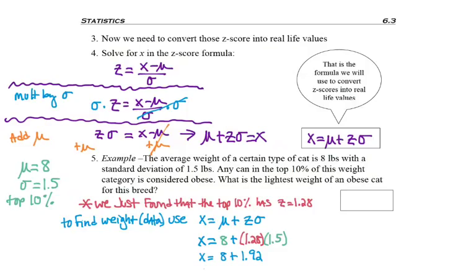So I multiplied, added, and I get 9.92. So that's my answer. Remember this is in pounds. The question asked what is the lightest weight? I'm answering in weight, and weight is in pounds. It's not a percent. But for this particular breed of cats, any cat that weighs 9.92 pounds or higher is obese.